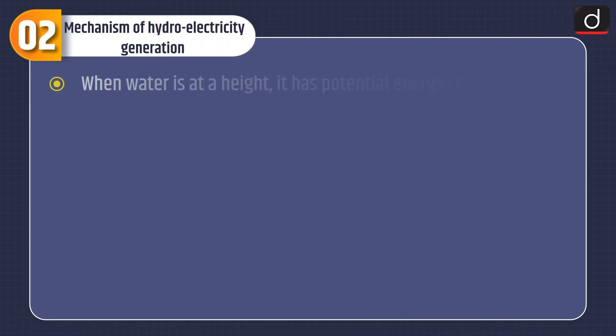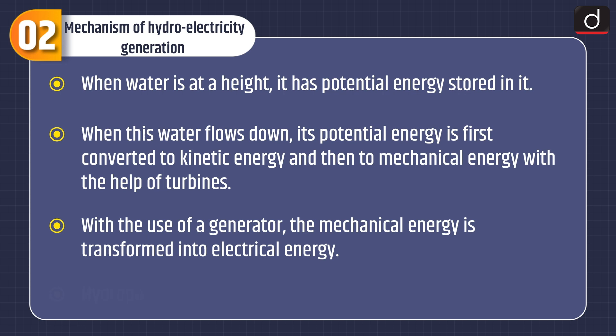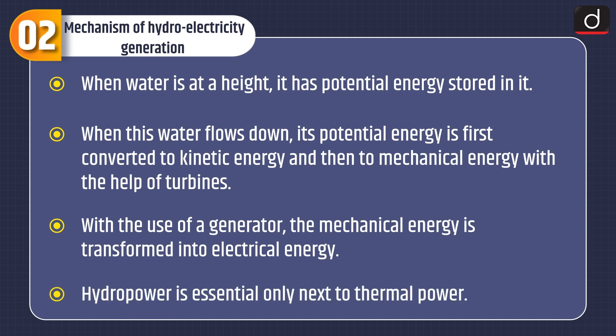Now let's discuss the mechanism of hydroelectricity generation. When water is at a height, it has potential energy stored in it. When this water flows down, its potential energy is first converted to kinetic energy and then to mechanical energy with the help of turbines. With the use of a generator, the mechanical energy is transformed into electrical energy. Hydropower is essential, only next to thermal power.